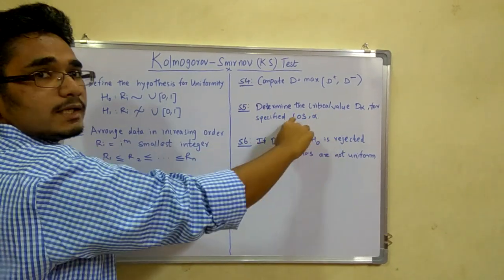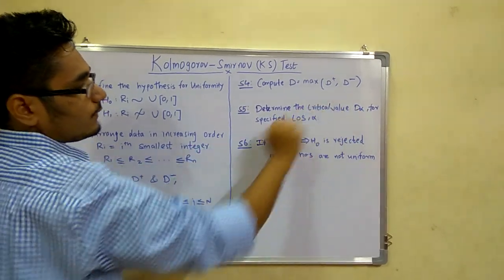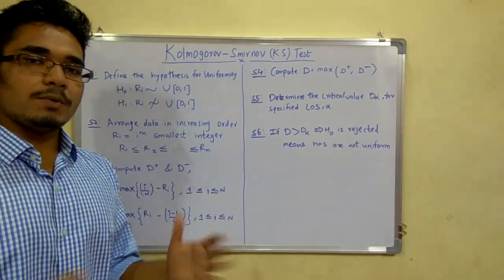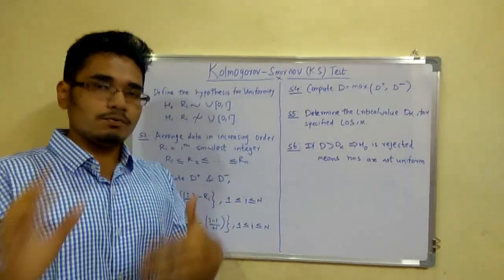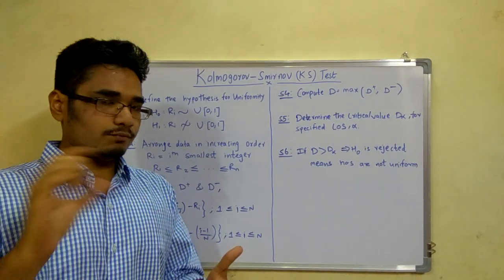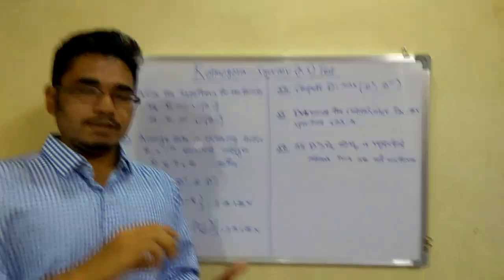Step 5 is to determine the critical value D_alpha for a specified level of significance alpha. In this problem, they will give you a specified value of alpha, such as 0.05. From the statistical tables, you determine the corresponding D_alpha value.